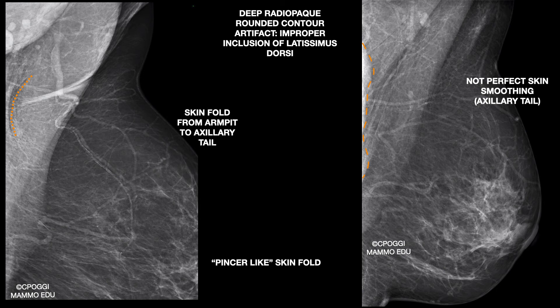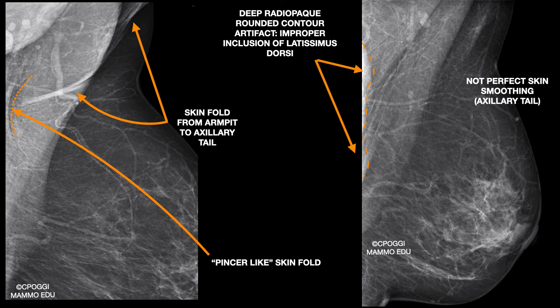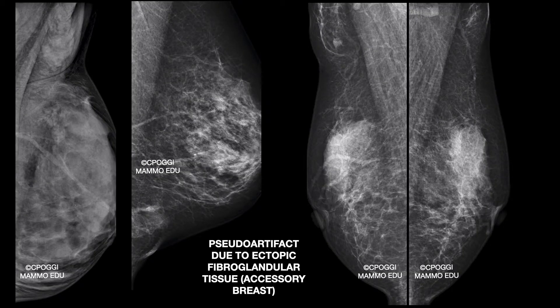Here is a fold that extends from the pectoralis major to the axillary tail, and also an inner pincer-like fold, commonly seen in this portion of the breast due to not effective tissue stretching. Here you can see an artifact due to the wrong inclusion of the medial central part of latissimus dorsi. This one in the axillary tail is very common and is not a real fold, but it could be mistaken for ectopic breast tissue.